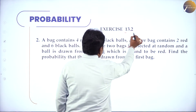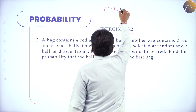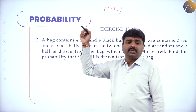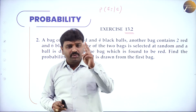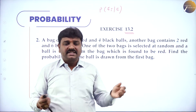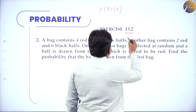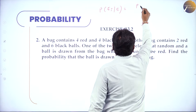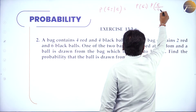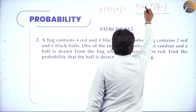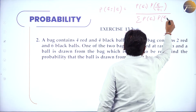Now the purely Bayes theorem conditions. P(Ei|E) where E1, E2, E3 are mutually exclusive and exhaustive events. P(Ei|E) = P(Ei) × P(E|Ei) divided by Σ P(Ei) × P(E|Ei). Two events are said to be mutually exclusive if they do not have any common element. Exhaustive means if you combine all the events, you should get the sample space.